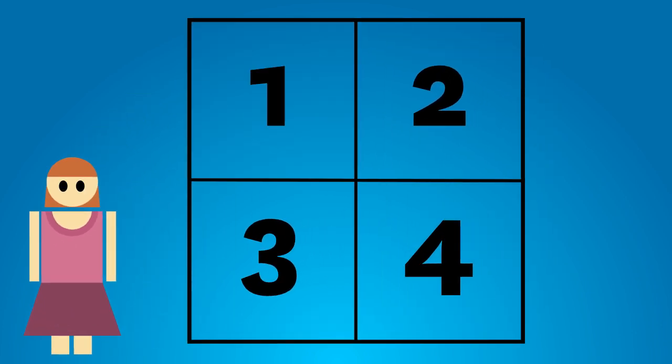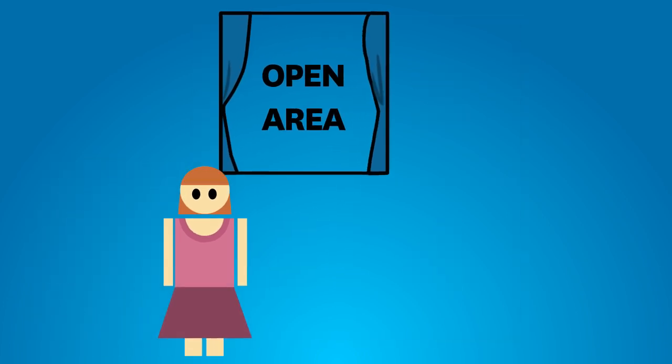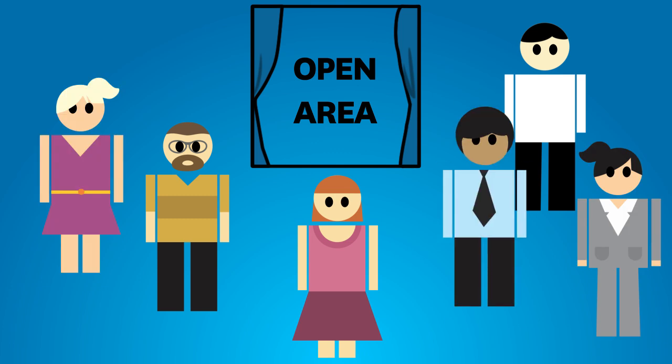Area 1 is commonly known as the open area. It represents information that Joe knows about herself and the people around her also know about her, like that she's a dedicated worker and she loves cats.